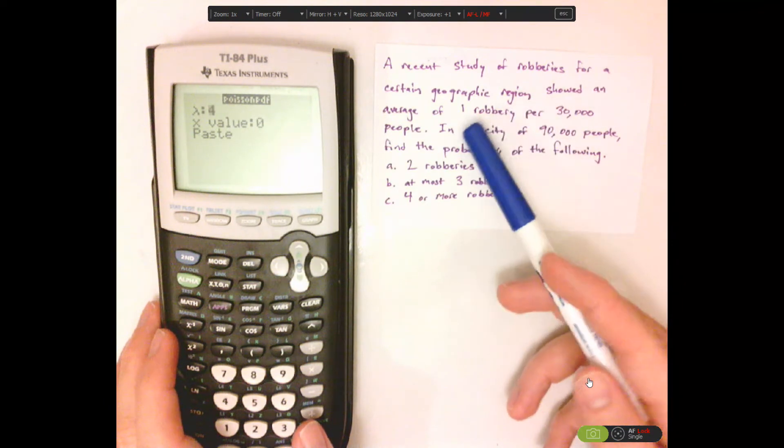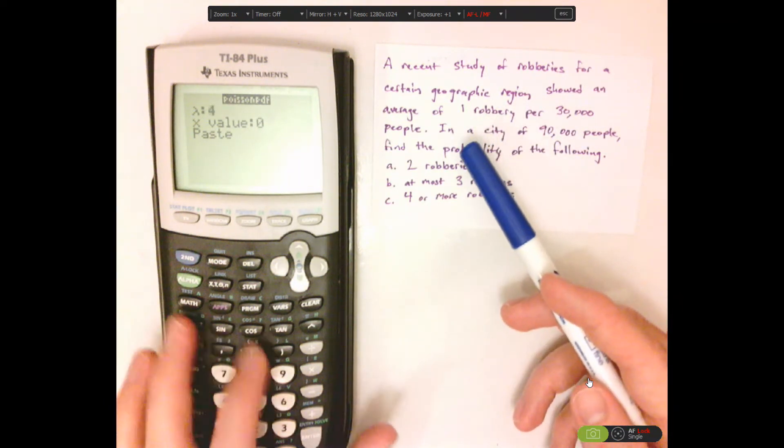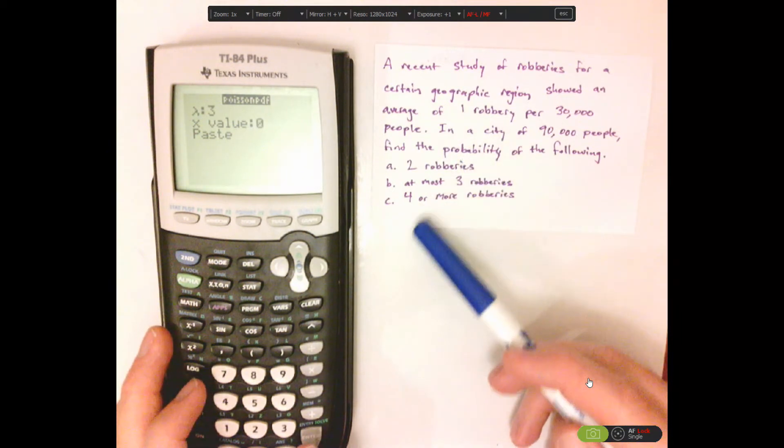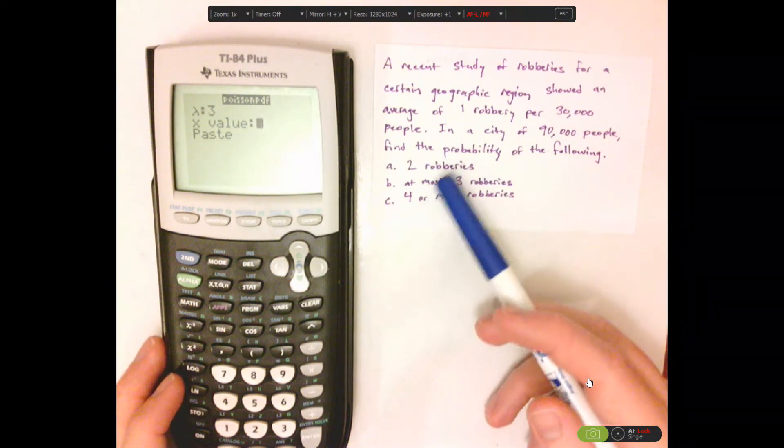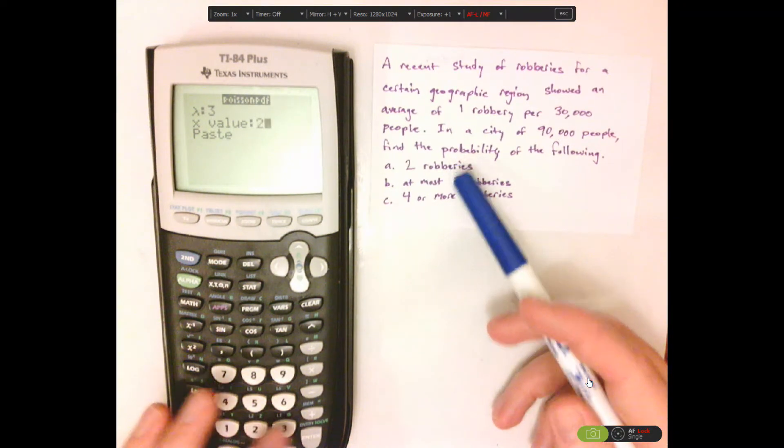Here, the average is three. Now, the X value is whatever probability that we're looking for. So we're looking for the probability of two robberies.